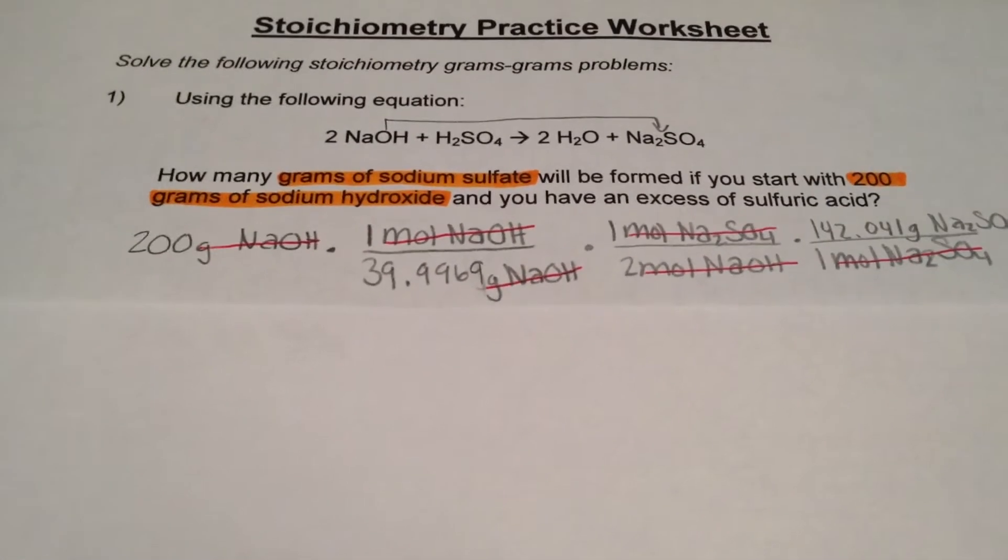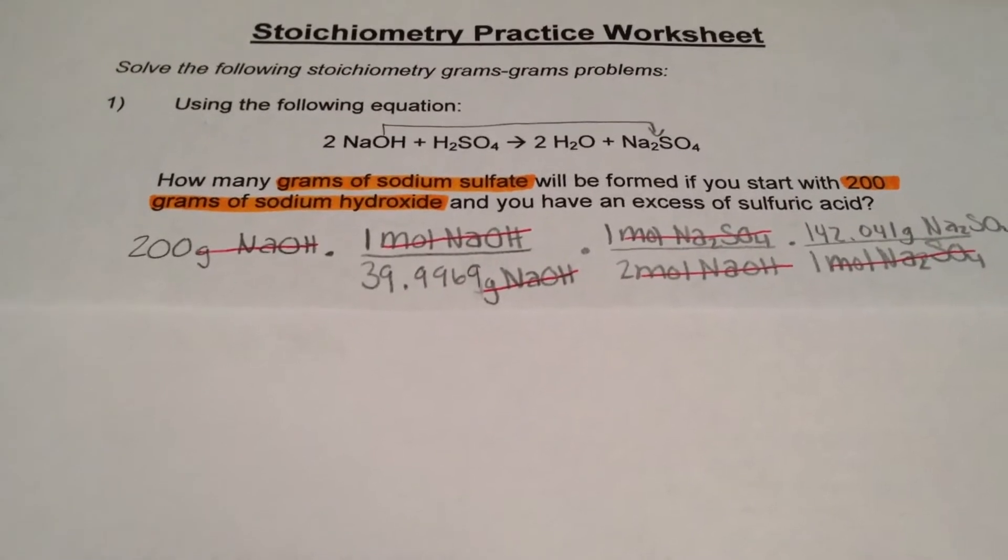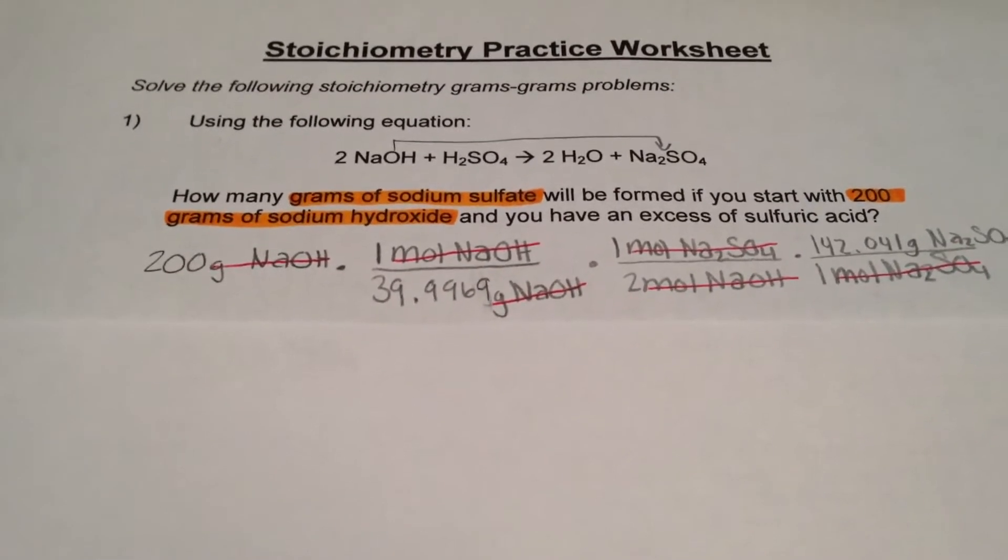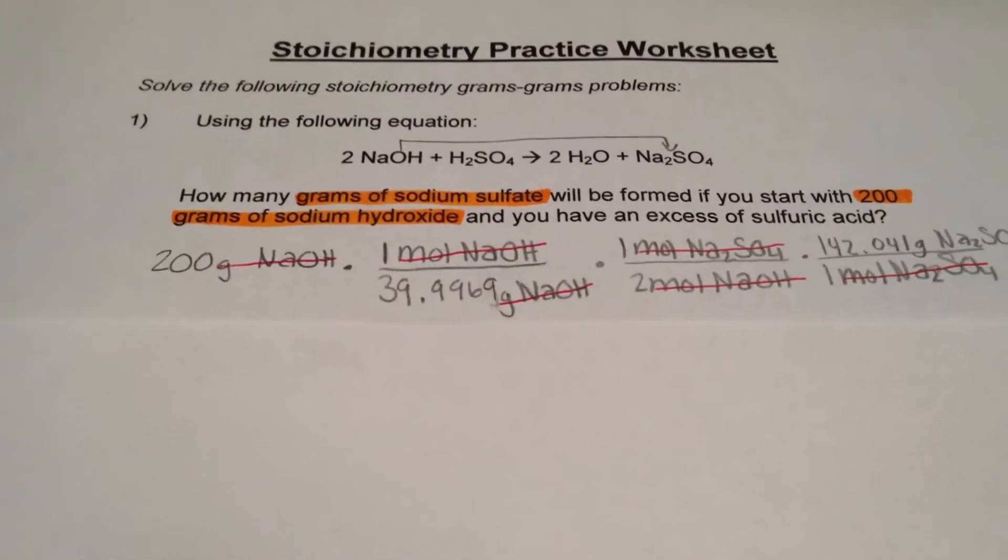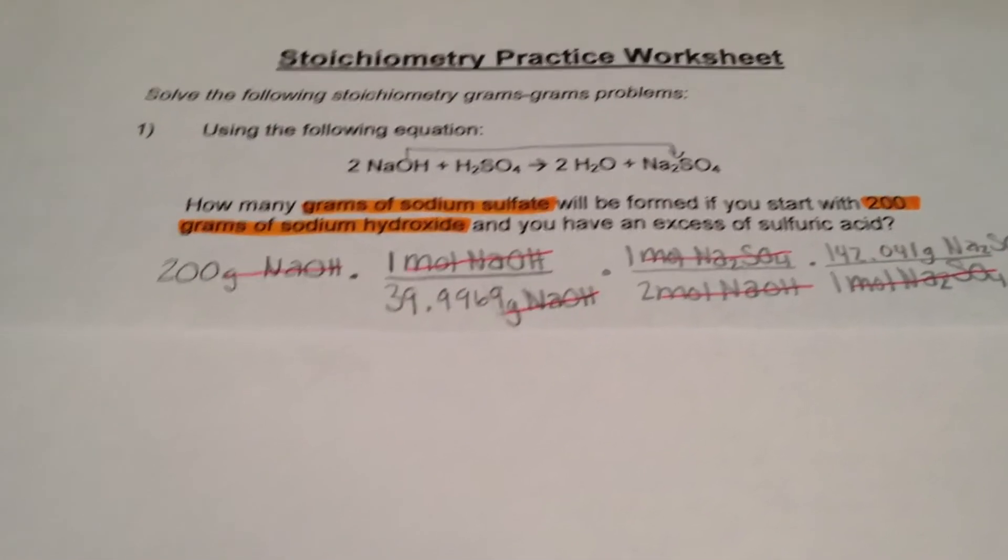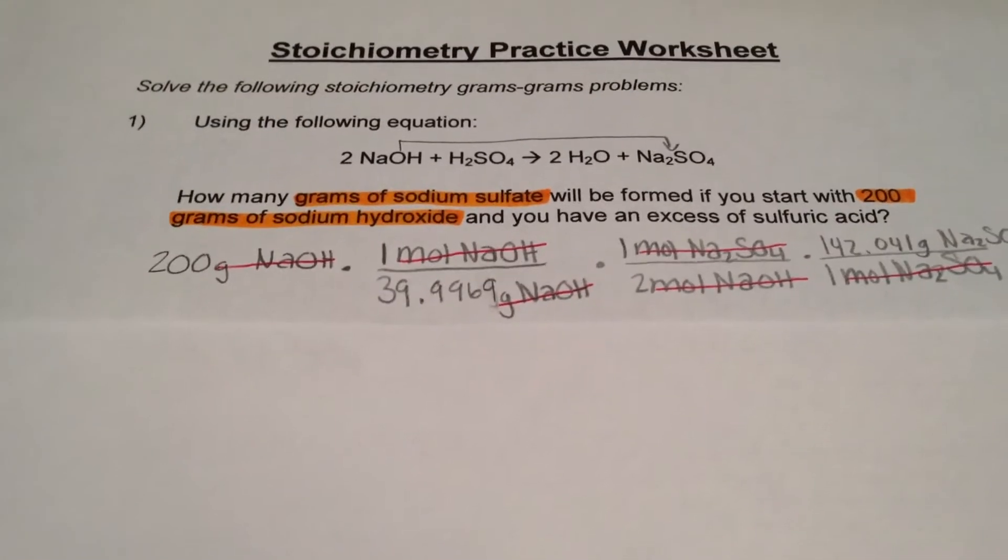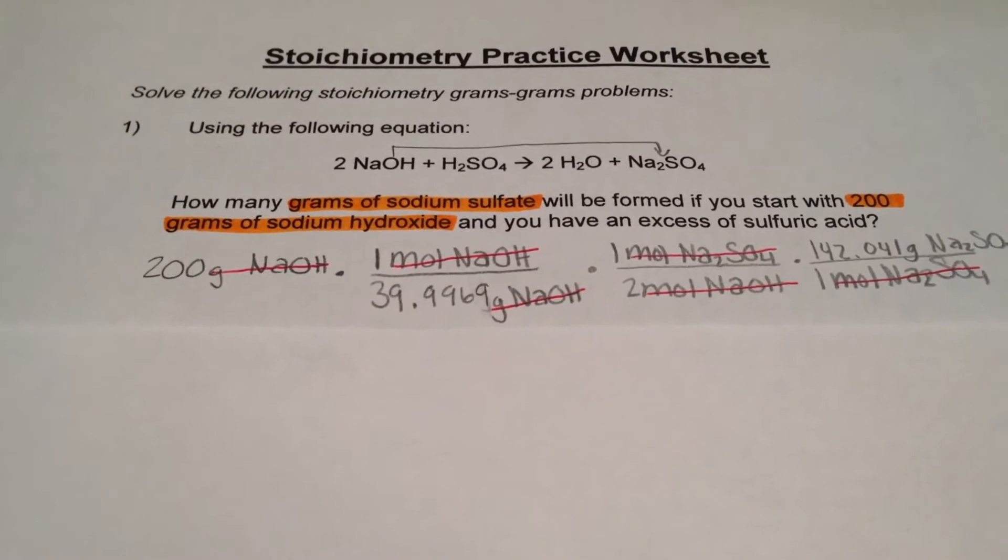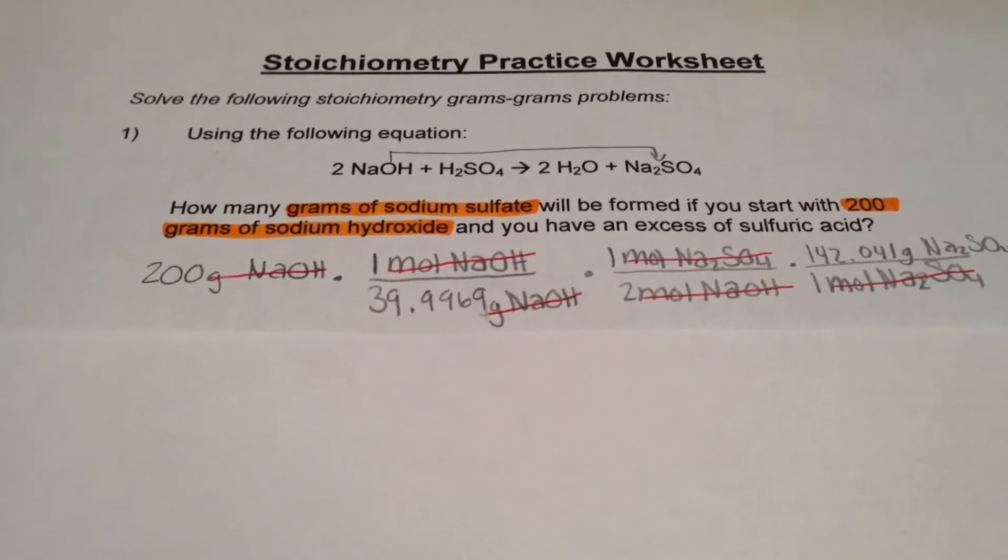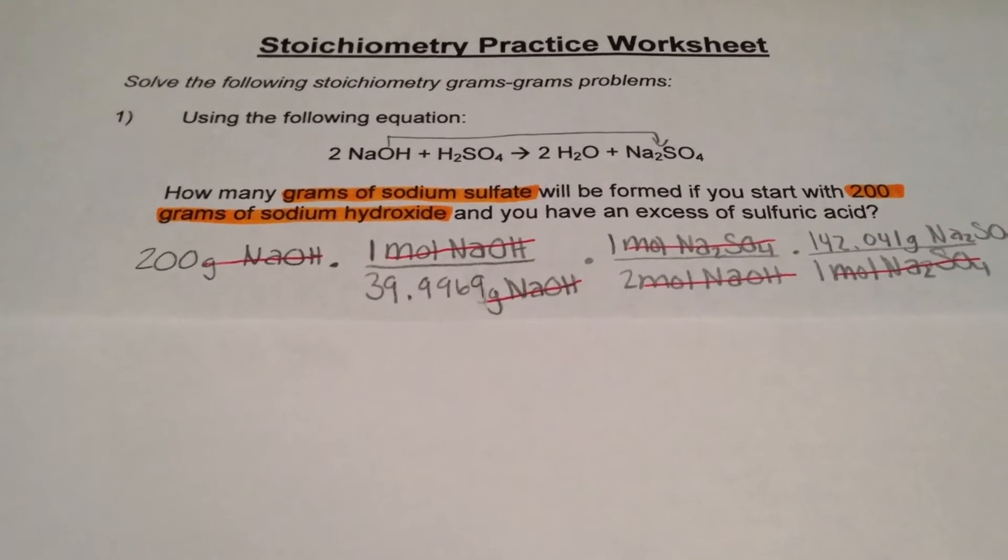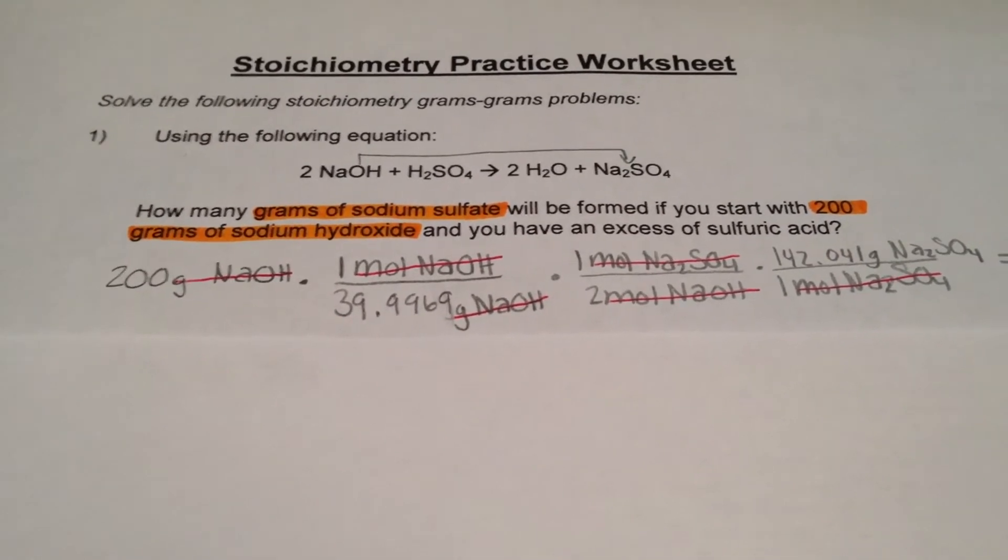Next, we have to do the molar ratio so we can go into the next compound that we want to find. As you can see from the equation, there are two moles of sodium hydroxide. That would go on the bottom so they will cancel. There is only one mole of sodium sulfate, so that goes on top.